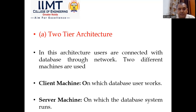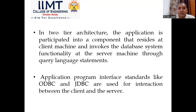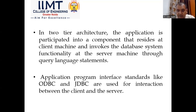In two-tier architecture, users are connected with the database through a network, and two different machines are used. One is the client machine on which the database user works, and another is the server machine on which the database system runs. The application is partitioned into a component that resides at the client machine and invokes database system functionality at the server through query language statements. Application program interface standards like ODBC (Oracle Database Connectivity) and JDBC (Java Database Connectivity) are used for interaction between client and server.